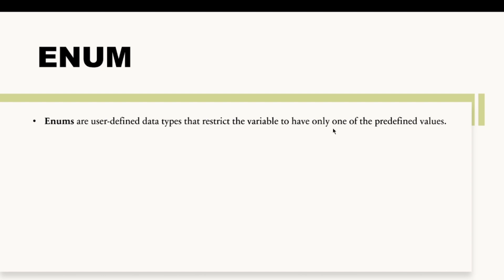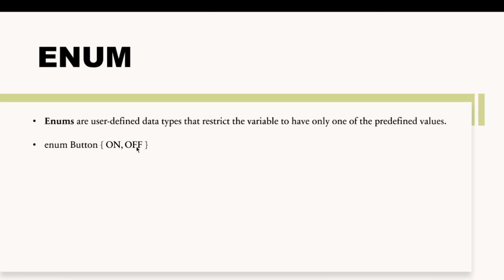We will understand this with the help of an example. This is how you define an enum in Solidity: first you write the keyword 'enum', then the name of the enum — in this case I'm writing 'Button' — and then the values of this Button, which are either 'On' or 'Off'.